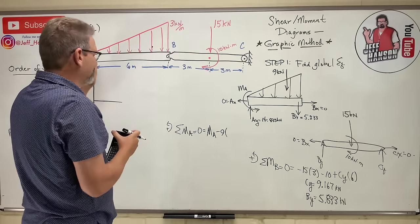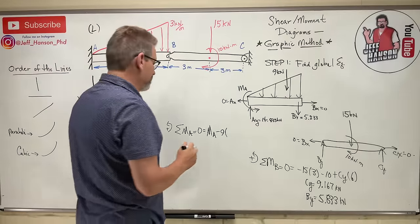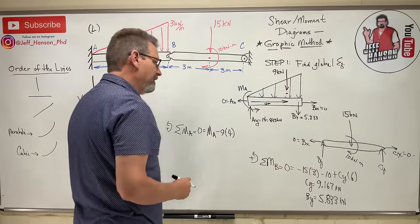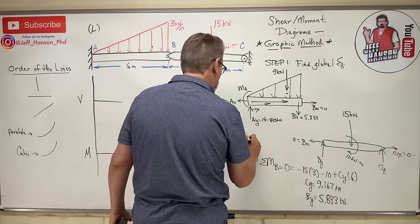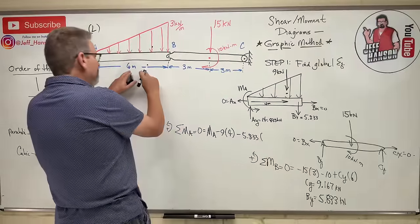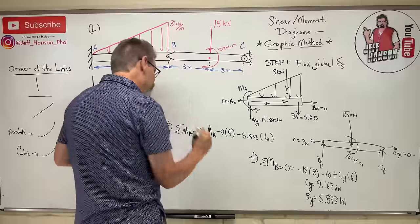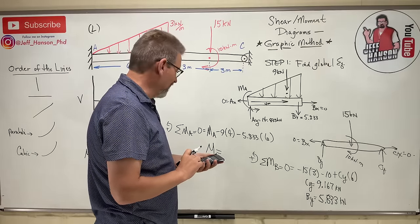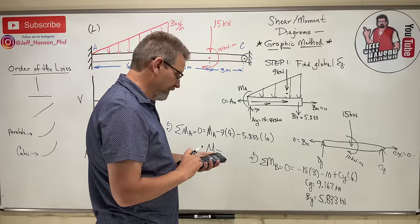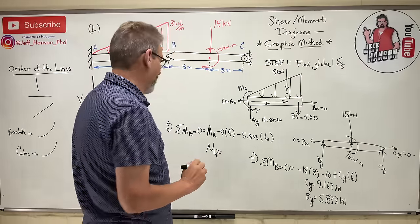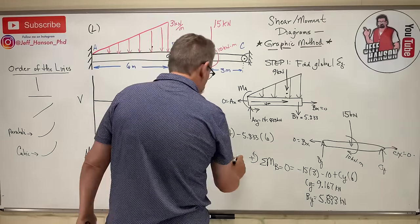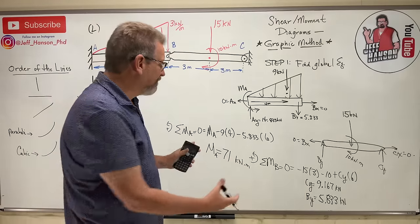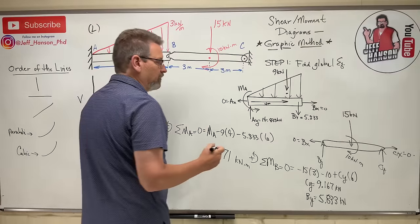Now finding Ma: taking moments at point A on piece 1 equals zero. Ma minus 9 × 4 (the centroid of the triangle is two-thirds of the base from A, so at 4 m) minus 5.833 × 6 = 0. Ma = 36 + 34.998 ≈ 71 kN·m. So that's global equilibrium done — that's the statics part.